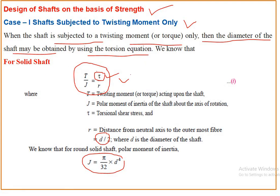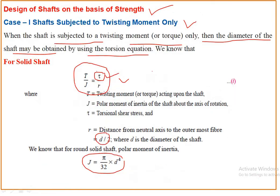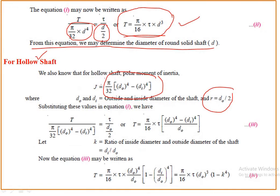Now for a hollow shaft, the polar moment of inertia is J = π/32 × (dO⁴ − dI⁴), where dO and dI are the outside and inside diameters of the shaft. And R = dO/2. Again, putting these two values into the torsion equation T/J = τ/R, and substituting the polar moment of inertia for the hollow shaft, we derive the torque equation for a hollow shaft.